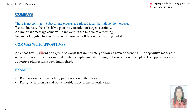A comma is also used with an appositive — a word or group of words that immediately follows a noun or pronoun. For example: 'Rambo won the prize, a fully paid vacation to Hawaii.' The group of words after the comma is an explanation of the prize. Similarly, 'Paris, the fashion capital of the world, is one of my favorite cities.' This complex sentence combines two simple sentences — 'Paris is the fashion capital' and 'Paris is one of my favorite cities' — separating the appositive phrase with commas.